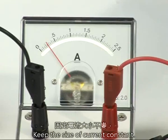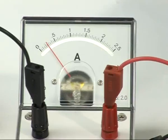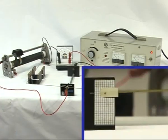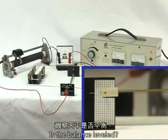Keep the size of current constant. Place a rider on XY. Is the balance levelled?